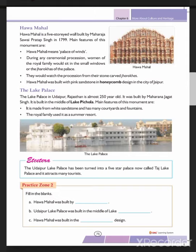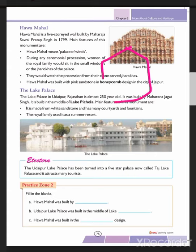Hawa Mahal has many small windows which you can see in the picture. It is built with pink sandstone in a honeycomb design — each section of the building forming a honeycomb-like pattern. This is the design known as a honeycomb design.